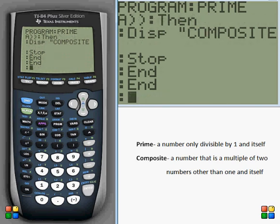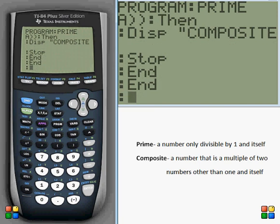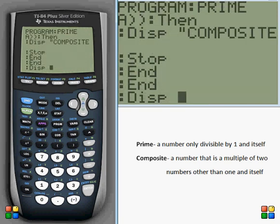And then if our number can make it through the for loop without ever entering in this if statement right here to display composite, then we know that our number is going to be prime, so we can go ahead and write display prime.